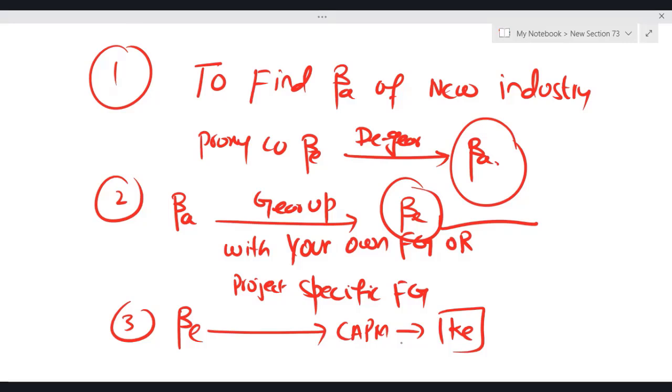Third, once you have calculated beta equity, then obviously by using CAPM, by using this beta equity into CAPM, you can calculate KE.